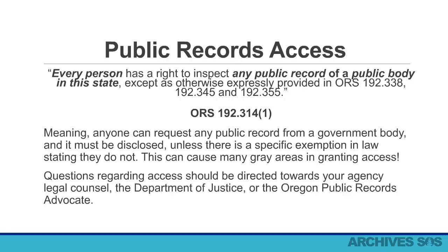Every person has a right to inspect any public record of a public body in this state, except as otherwise expressly provided in ORS 192.338, 192.345, and 192.355. ORS 192.314, subsection 1. Meaning, anyone can request a public record from a government body and it must be disclosed, unless there is a specific exemption in law stating that they do not.